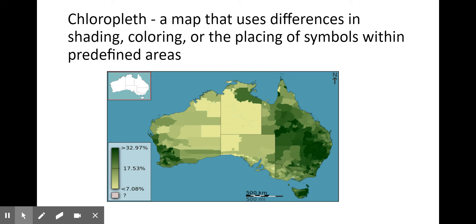The first one, and probably the one we'll use the most, is called a choropleth map. A choropleth map uses differences in shading, coloring, or placing of symbols in order to emphasize a different piece of data. This is a map of Australia, where you can see the different territories shaded a different color to represent a different data point on the map.